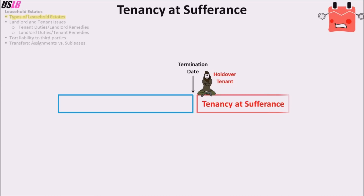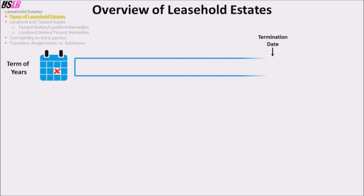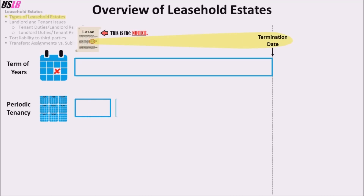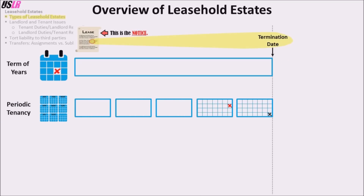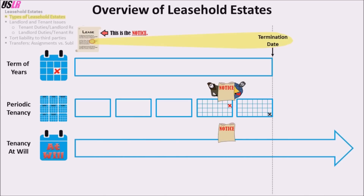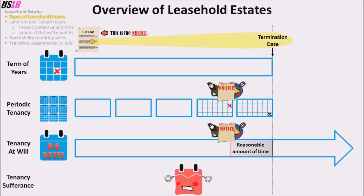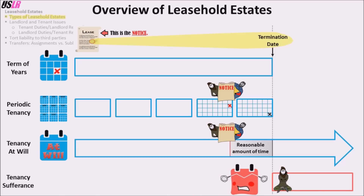The tenancy at sufferance ends when the landlord evicts the holdover tenant or if the landlord decides to impose a new lease on the holdover tenant. For a quick overview: the term of years lasts for a fixed period with no need for notice of termination; the periodic tenancy continues from period to period and ends after notice; the tenancy at will has no end date and may be terminated at any time with reasonable notice; and the tenancy at sufferance is the situation where the lease has ended and the tenant has not moved out.